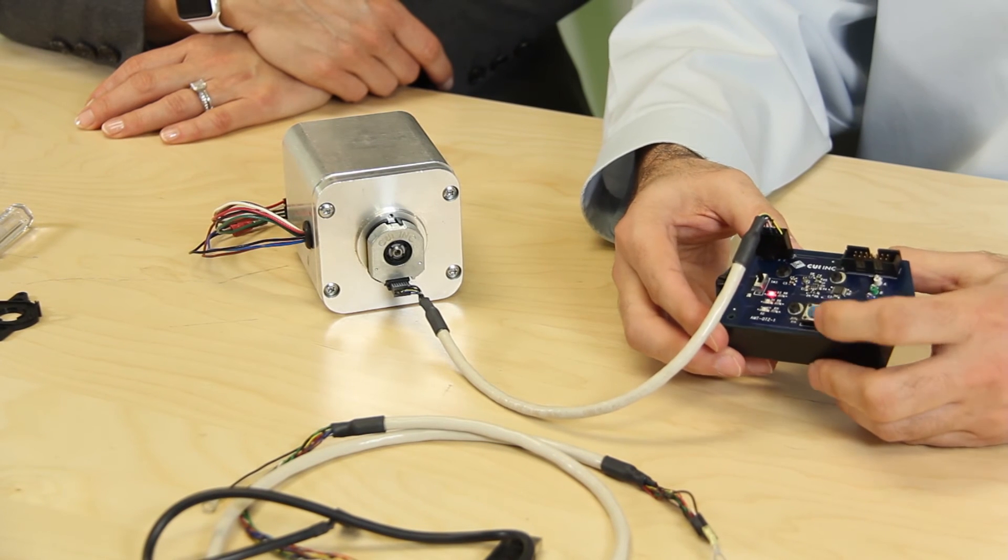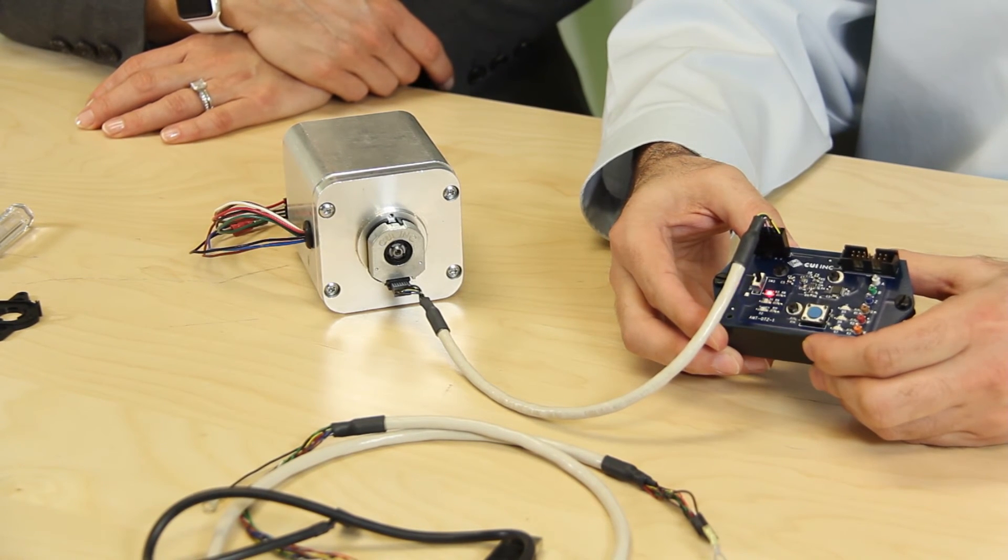Turn the module on, plug it into the encoder, and check the link to see that we have proper communication with the encoder. Then press the alignment button, and just that easy, we've aligned the encoder.